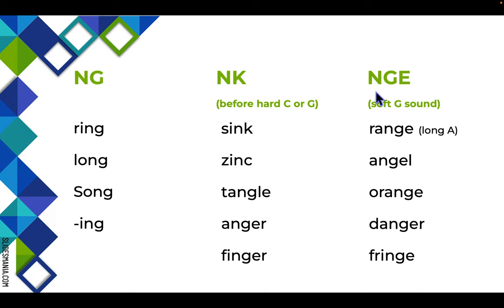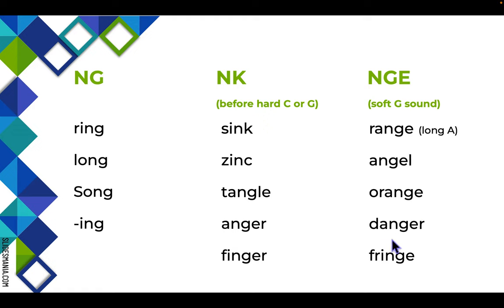If you have N in a G-E, meaning it's a soft G sound of /j/, rather than a hard G sound like in 'anger,' 'finger,' or 'tangle,' then you wind up with a word like 'range.' Notice the /ng/ sound disappears and it's just 'range' — N and then G-E together say /j/. Examples: 'angel,' 'orange,' 'danger,' or 'fringe.' So if you have N-G-E, the N makes its normal sound; N before a K, hard C, or hard G gives the /ng/ sound.